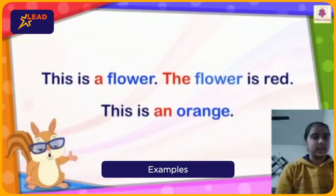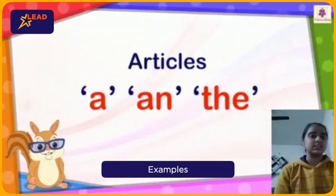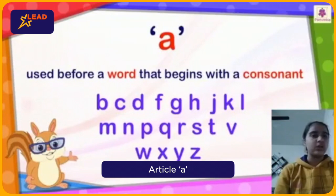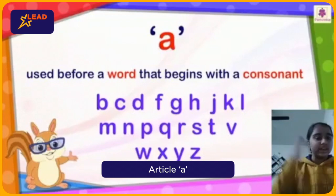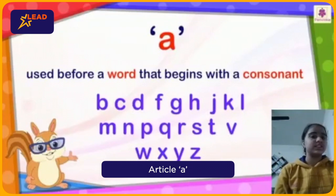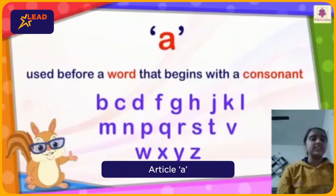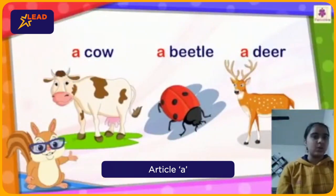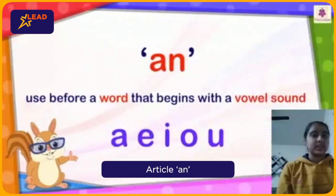There are articles A, An, and The. Let us understand about A. A is used before a word that begins with a consonant. I hope you know what consonants are — here they are written for you: B, C, D, F, G, H, J, K, L, M, N, P, Q, R, S, T, V, W, X, Y, Z. So A is used before words that begin with a consonant. Examples are: a cow, a beetle, and a deer. You can use it with other words also.